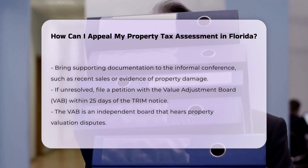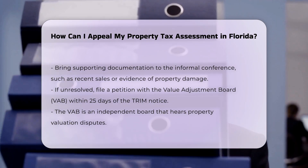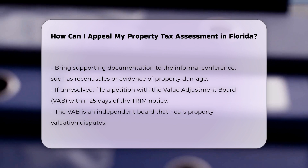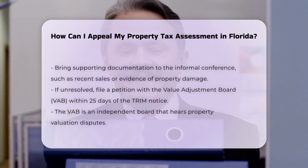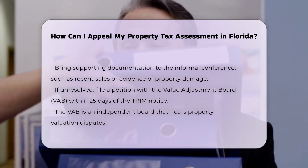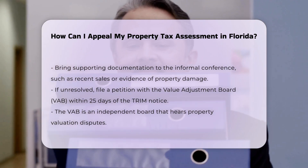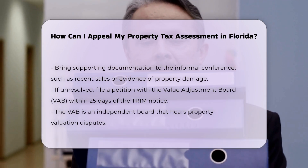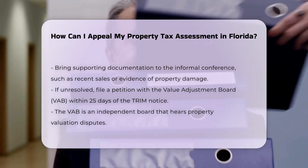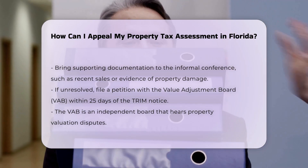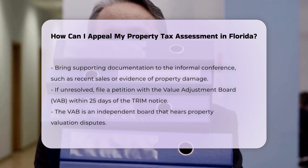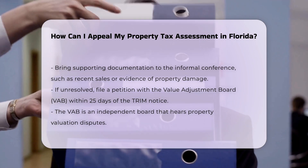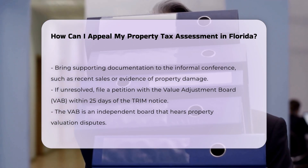Preparing for the VAB Hearing: gather relevant evidence, such as your property appraisal, listings of comparable properties, and any documentation of property damage or other factors that may impact the value of your property. The burden of proof lies with the property owner, so presenting persuasive evidence is essential.